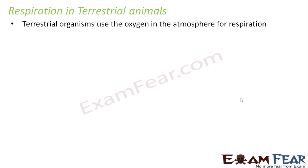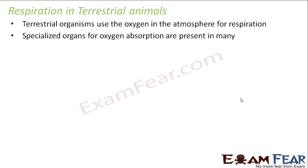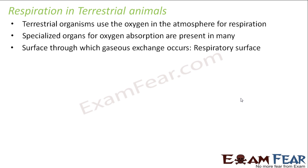Let us now look at respiration in terrestrial animals. Terrestrial animals use the oxygen in the atmosphere for respiration. Specialized organs for oxygen absorption are present in many — for example, in human beings we have lungs. Different organisms have different types of body structures and they have specialized organs for oxygen absorption. The surface through which the gaseous exchange occurs is known as the respiratory surface. For example, in human beings we have lungs, and even inside lungs there has to be a surface where exactly the exchange of gas is happening — that surface is known as the respiratory surface.